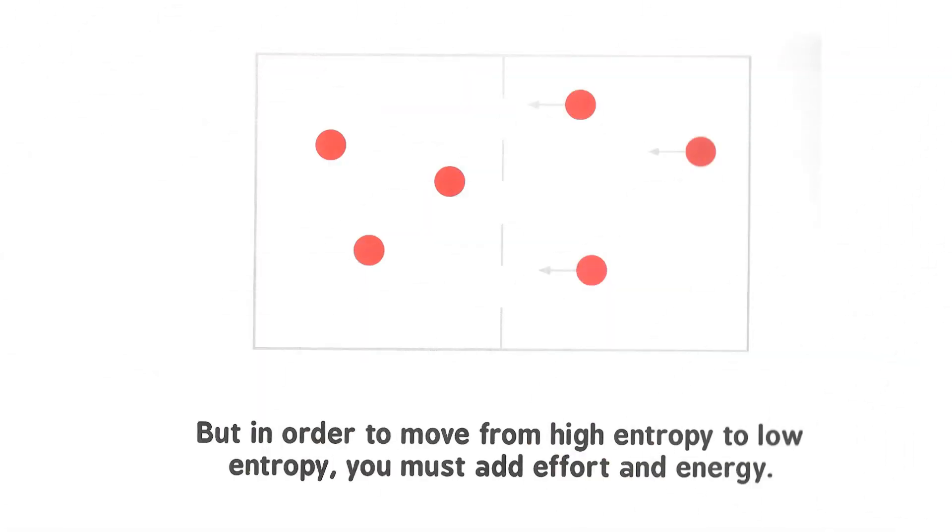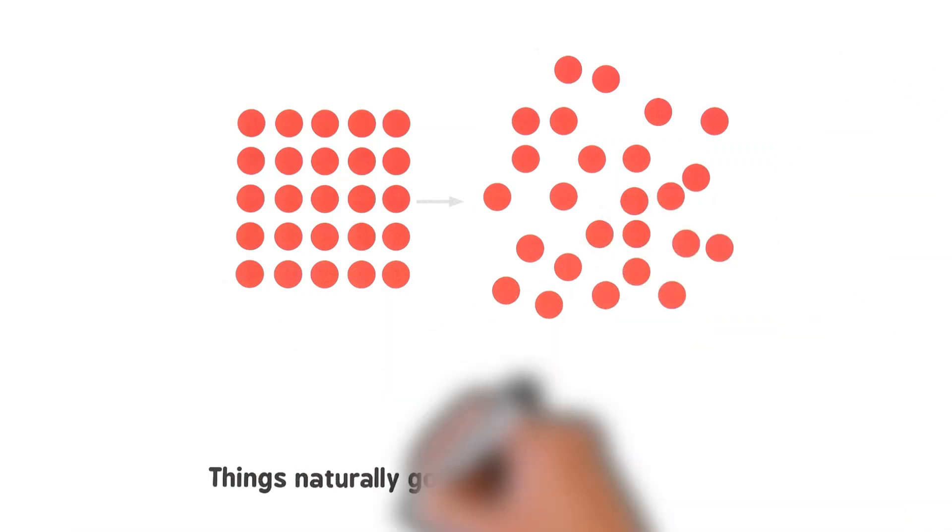But in order to move from high entropy to low entropy, you must add effort and energy. Things naturally go from organized to messy.